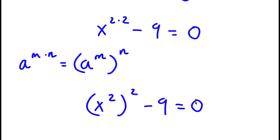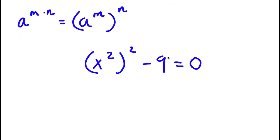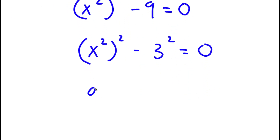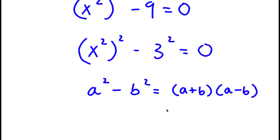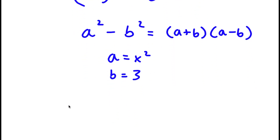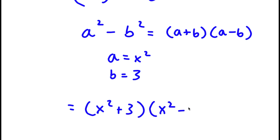Now this minus 9 equals 0. And 9 is the same thing as 3 to the power of 2. So now I have x to the power of 2 to the power of 2 minus 3 to the power of 2 equals 0. Now if I have something in the form a squared minus b squared, this equals a plus b times a minus b. In this case, a is equal to x to the power of 2 and b is equal to 3. So now I have x to the power of 2 plus 3 times x to the power of 2 minus 3, equal to 0.